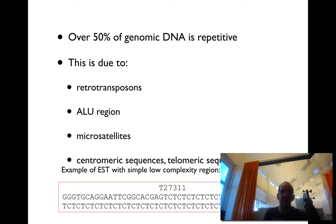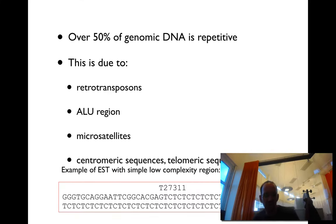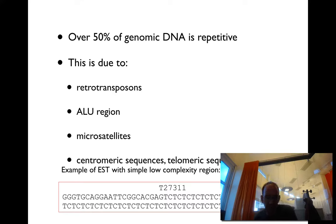Over 50% of genomic DNA in humans is repetitive. There are several reasons for this: retrotransposons, Alu regions, microsatellites, etc. You also have telomeric regions. So for instance, you can have a sequence like TC repeated many times — things like that.